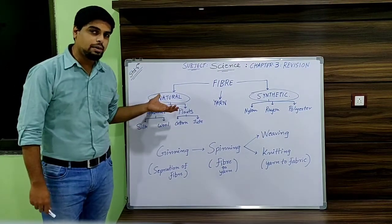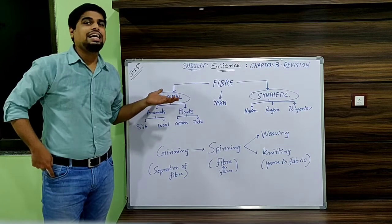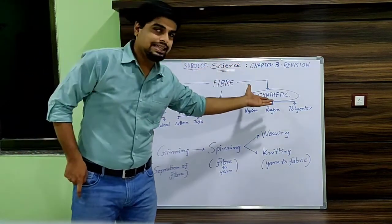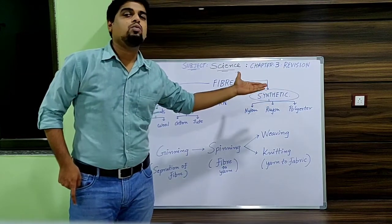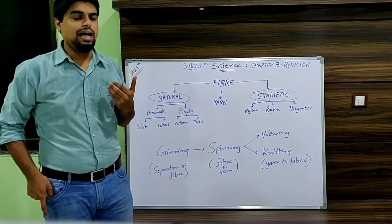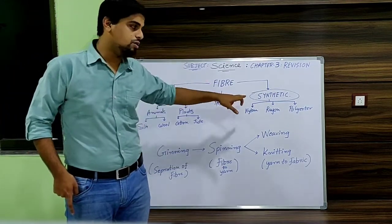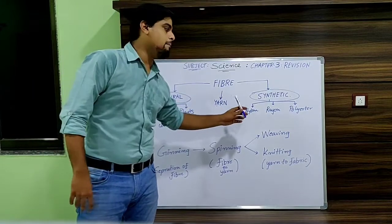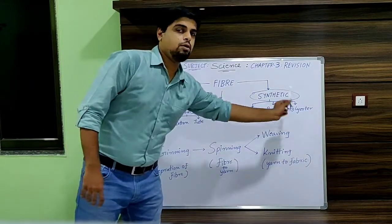So what do you mean by natural fiber? A fiber that is obtained from natural resources. And what do you mean by synthetic fiber? The fiber which is made in laboratories by humans using chemicals. In synthetic fiber they have given three examples: nylon, rayon and polyester.